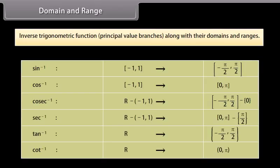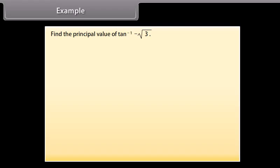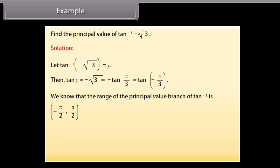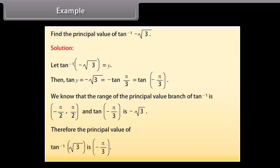The table gives the inverse trigonometric functions' principal value branches along with their domains and ranges. Example: find the principal value of tan⁻¹(−√3). Let tan⁻¹(−√3) = y, so tan y = −√3 = −tan(π/3) = tan(−π/3). Since the range of the principal value branch of tan⁻¹ is (−π/2, π/2) and tan(−π/3) = −√3, the principal value of tan⁻¹(−√3) is −π/3.